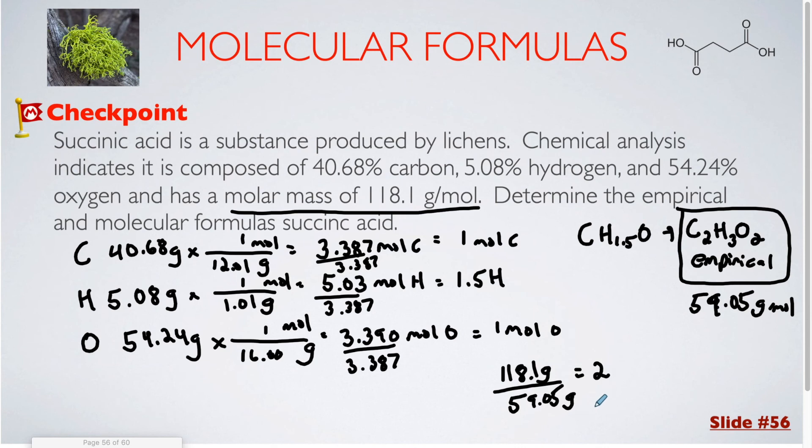So this is telling me that my molecular formula should be twice as big as the empirical formula that I found before. So I'm going to multiply each of those subscripts by 2. C4, H6, O4. So that is going to be my molecular formula.